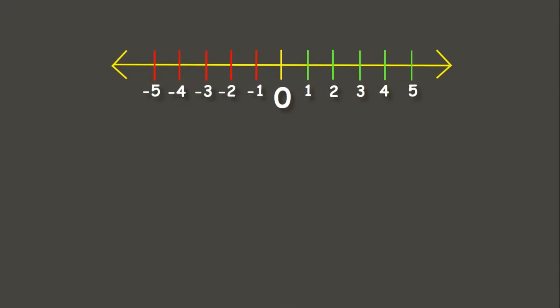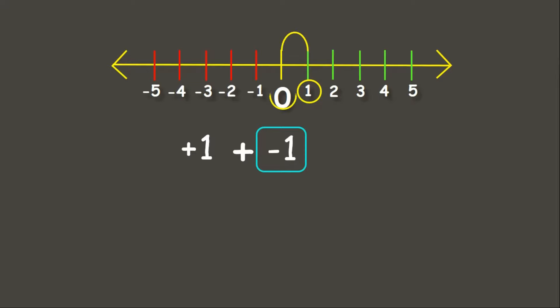Now let's try positive 1 plus negative 1. As we can see, we are adding opposite signs — one positive and one negative. Our first addend is positive 1. We add negative 1, and since this is a negative integer, we move 1 unit to the left. Now we got 0. It means that positive 1 plus negative 1 equals 0.